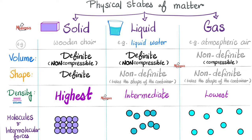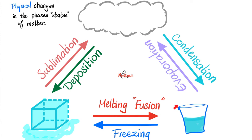Gases: volume is not definite, shape is also non-definite — you can compress the gas, and it will take the shape of whatever container it's in. Density is the lowest, and the molecules are far away from one another. Here is liquid water, here is a piece of ice, and here is water vapor.